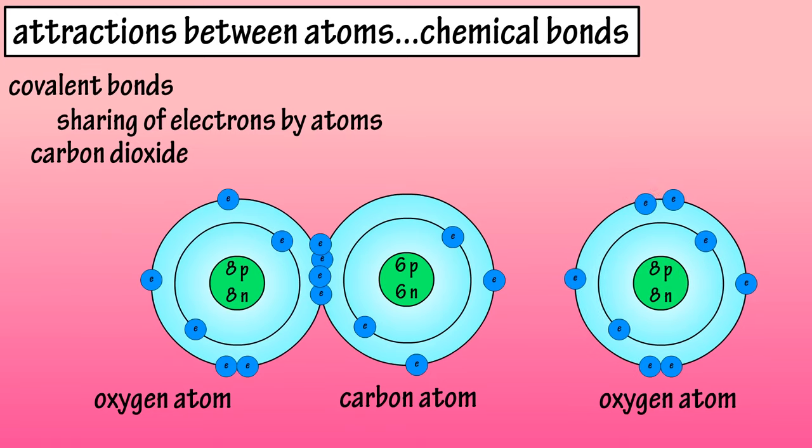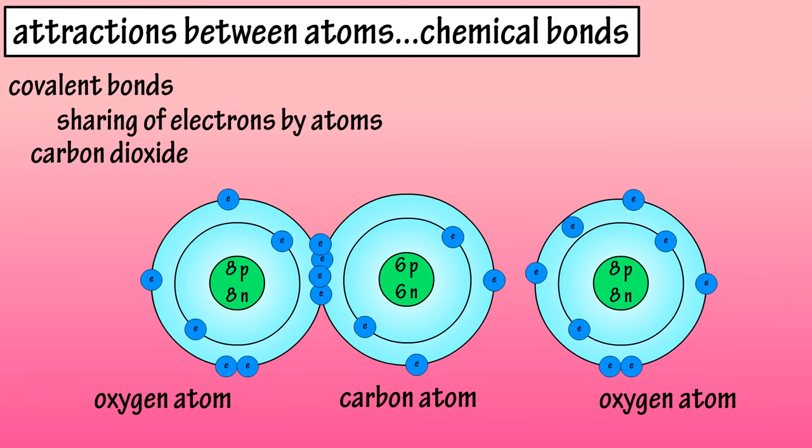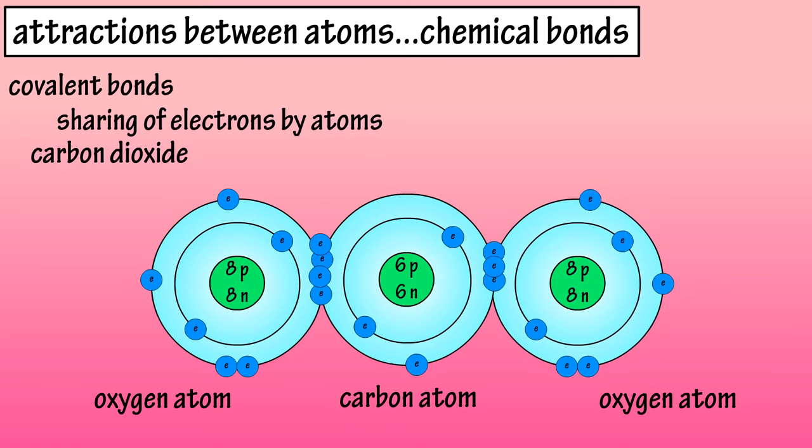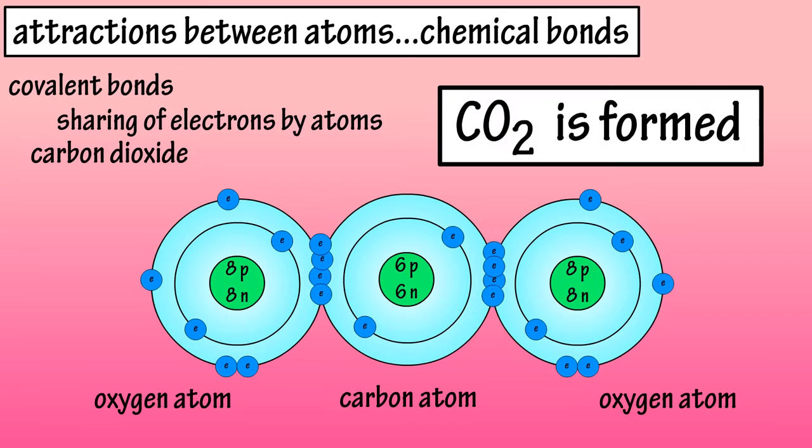Then oxygen atom number 2 can come in, and like oxygen atom number 1, it can share 2 of its electrons with the carbon atom, and again in return the carbon atom has 2 more of its own electrons that it can share with oxygen atom number 2. So now all 3 atoms are happy.